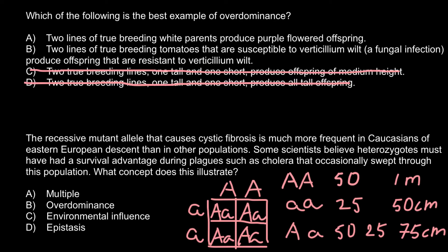We are left with two answers. Answer A: two lines of true breeding white parents produce purple-flowered offspring. Usually in textbooks we have examples where two purple-flowered plants produce offspring where a quarter would be white-flowered, because the dominant allele produces color and the recessive mutated allele cannot produce color.